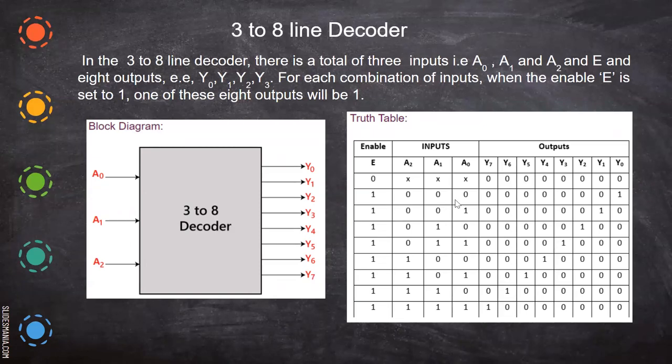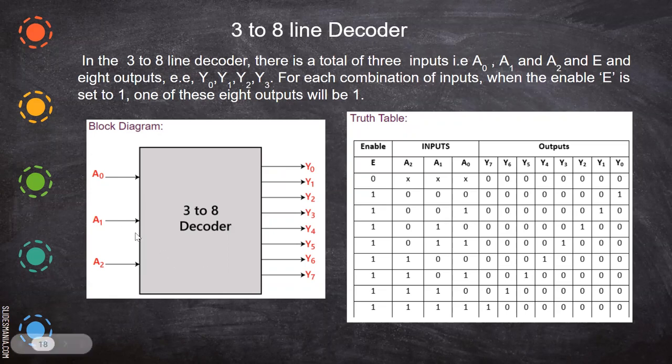So here, we'll see only these three. 0, 0, 0 means it is Y naught. So here, we'll get output. Then 0, 0, 1. That is 0, 0, 1 means Y1 here. So in that respective position, only you will put the 1. Because that is where you will get output. So this is how, this is the explanation of this truth table.